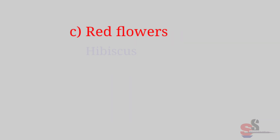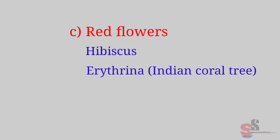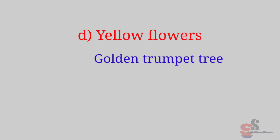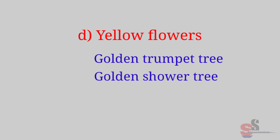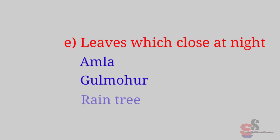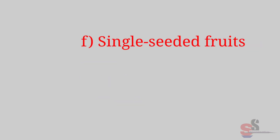C. Red flowers — Hibiscus, Erythrina, Indian coral tree, Flame of the forest. D. Yellow flowers — Golden trumpet tree, Golden shower tree, Yellow canna. E. Leaves which close at night — Aamla, Gulmohor, Rain tree.